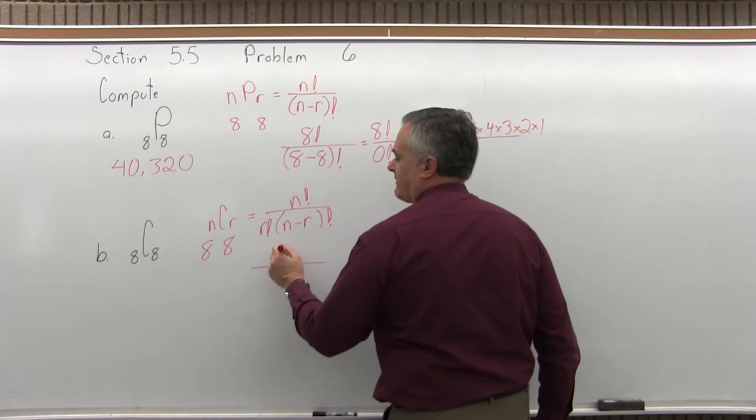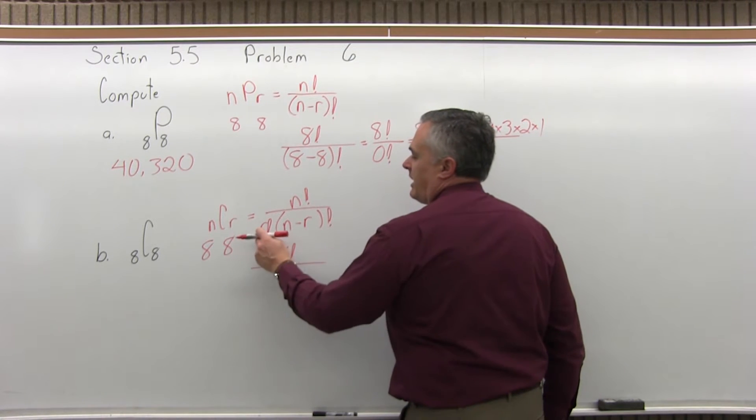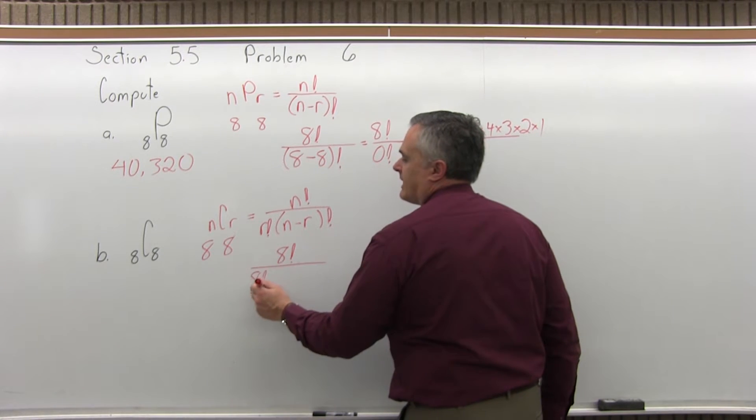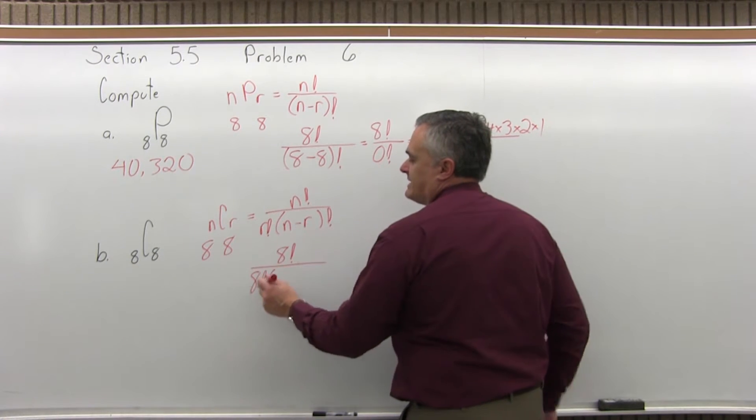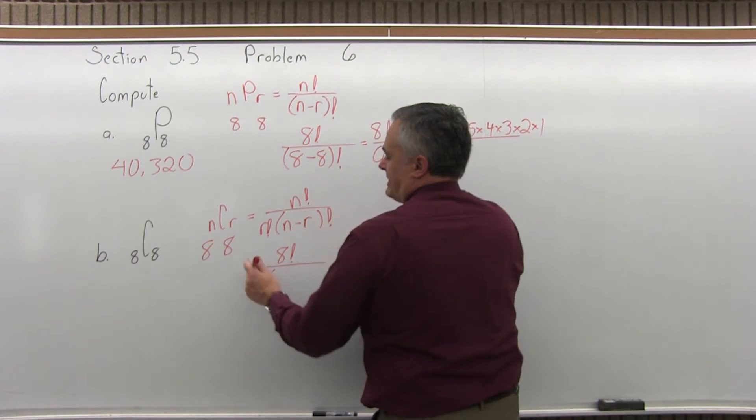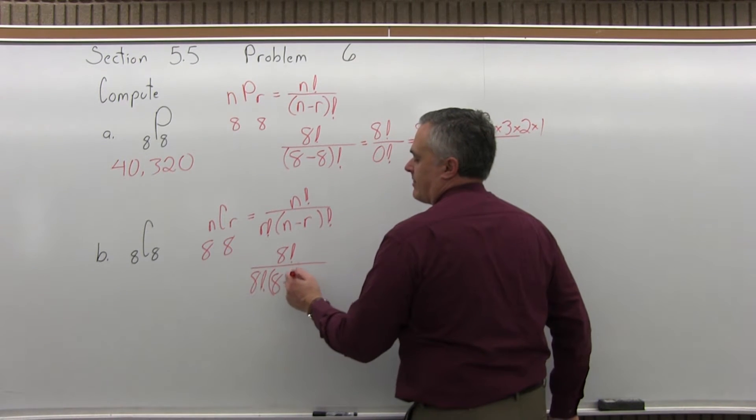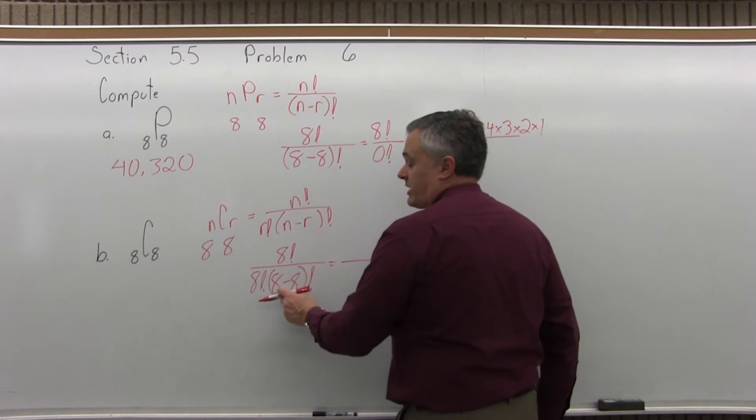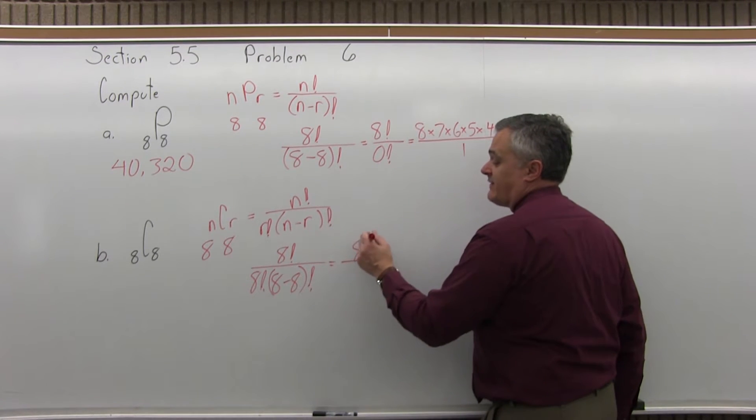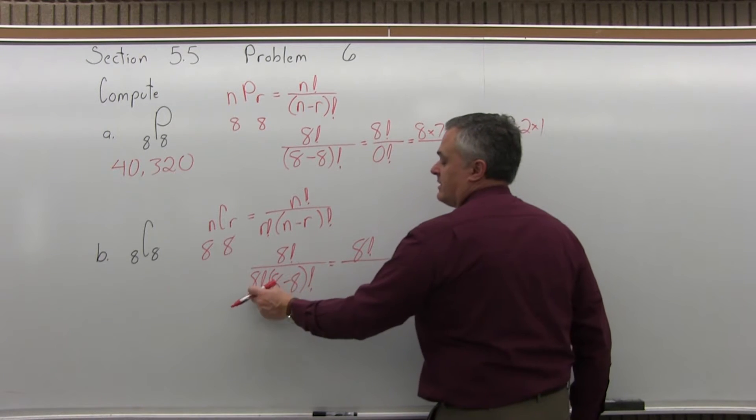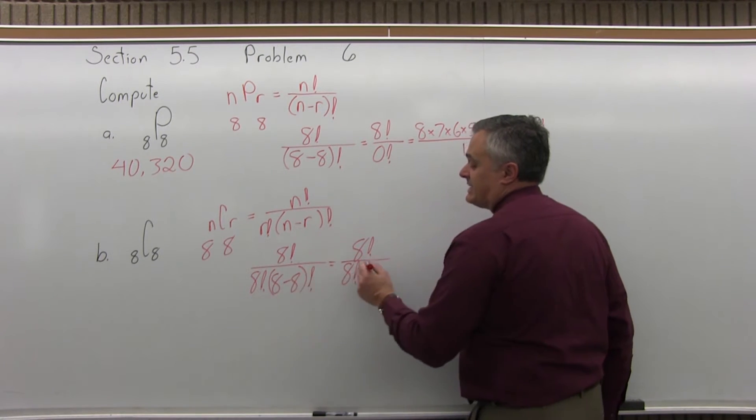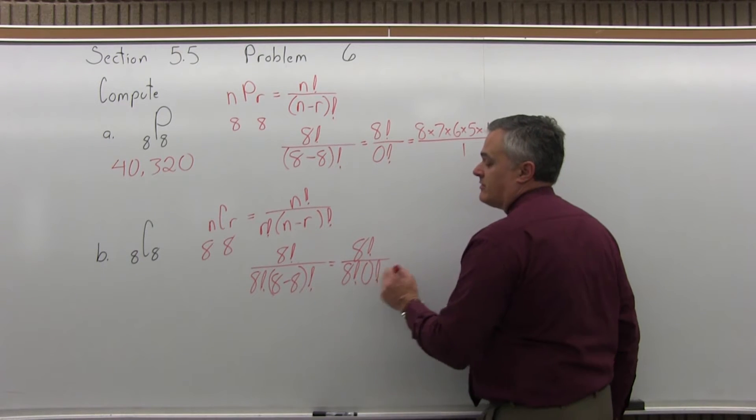So, n factorial is 8 factorial for the numerator. In the denominator, the r factorial will be 8 factorial. And then in the parentheses, n minus r will be 8 minus 8 factorial. Do your work in parentheses first to leave 8 factorial in the numerator. There's an 8 factorial in the denominator times 8 minus 8 is 0 factorial.